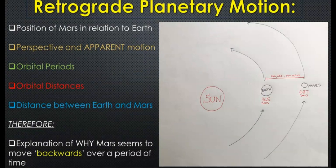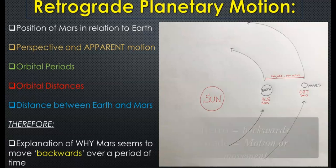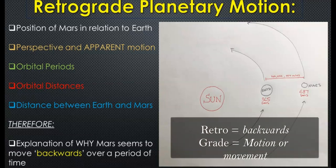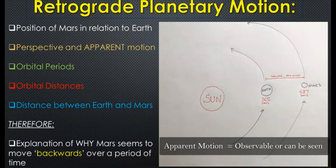Looking at speed — how fast Earth and Mars orbit the sun — gives us an understanding of retrograde motion. Retro means backward, and grade means progression, so it's a backward progression of Mars that people observed over periods of years. The Egyptians and Greeks used their geocentric models and epicycles to explain this, but the heliocentric model with the sun in the middle made it easy to understand.